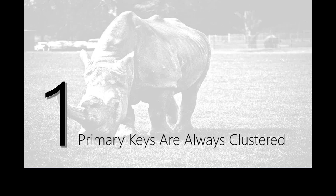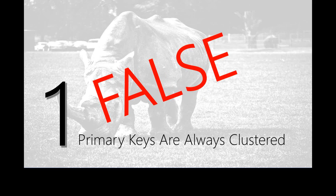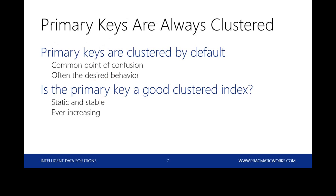The first myth about indexes is that primary keys are always clustered. Primary keys are not always clustered indexes. Primary keys are clustered by default, but not always — you can't just assume that because there's a primary key, that's the clustered index. It doesn't work out that way, and you can reach some very bad conclusions based on that assumption.